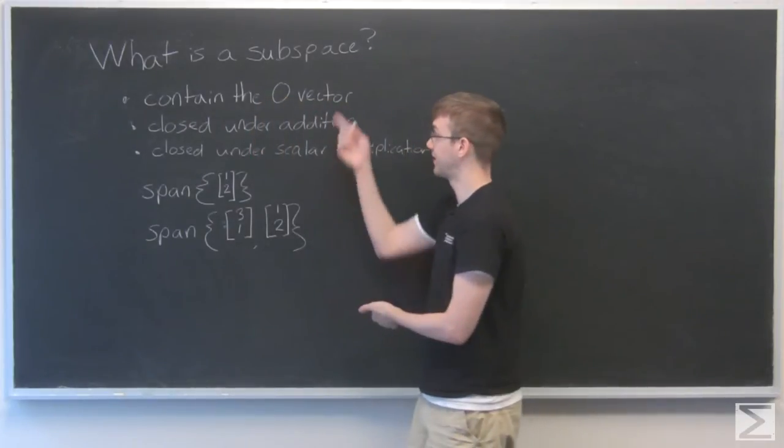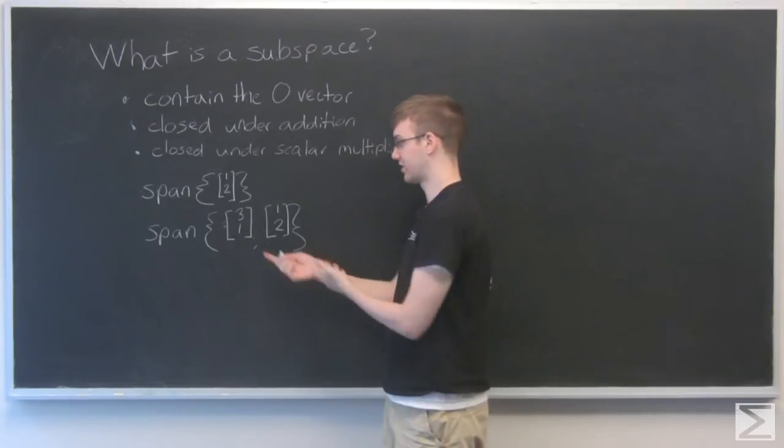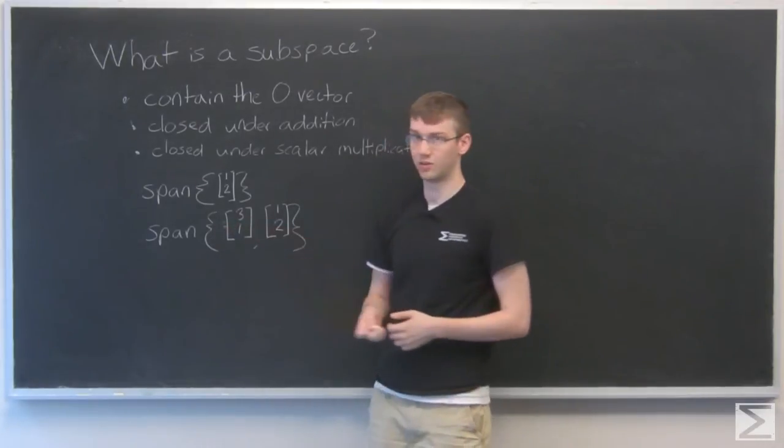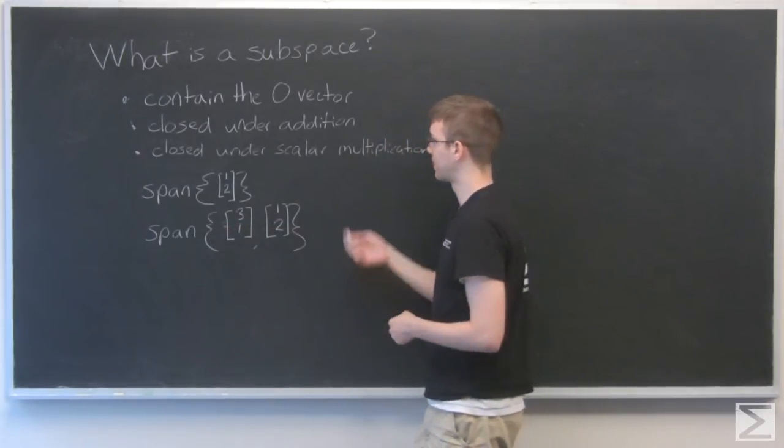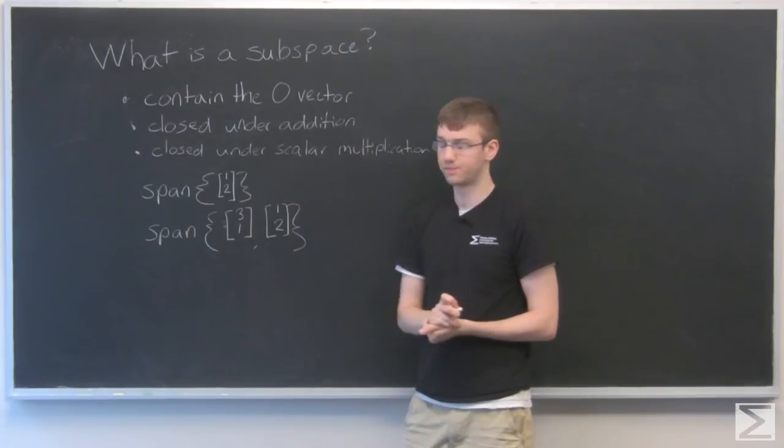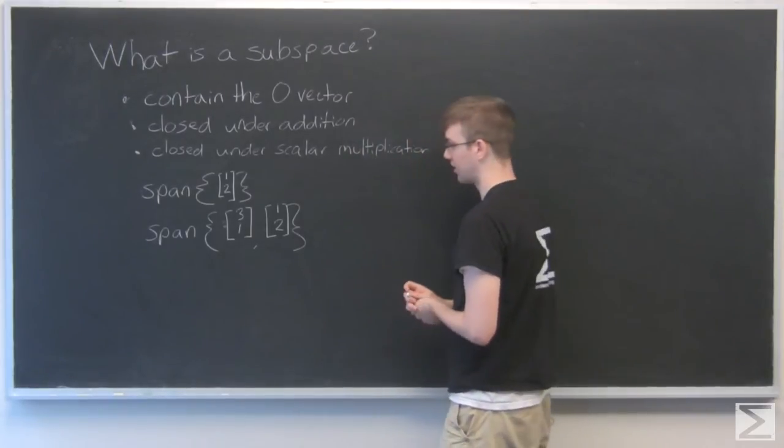Okay, so does this contain the zero vector? Yes, because it's just linear combinations. You can multiply both of them by zero and get out the zero vector. Is this closed under addition? Good question.